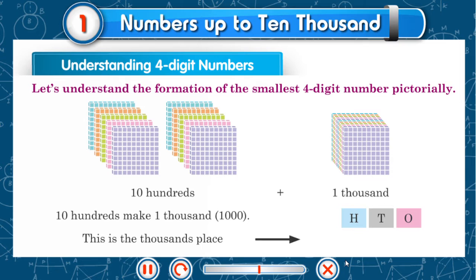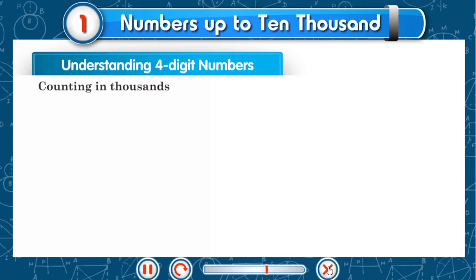This is the thousands place: Th. Th 1, H 0, T 0, O 0. Counting in thousands.